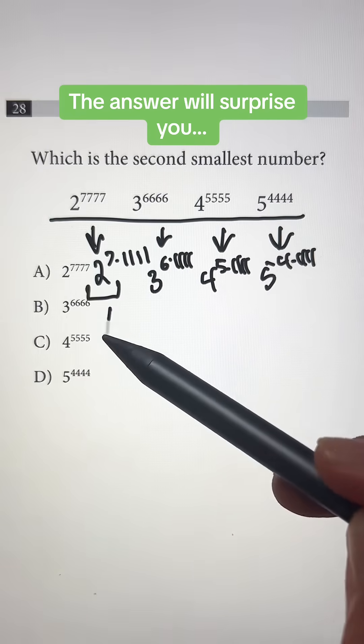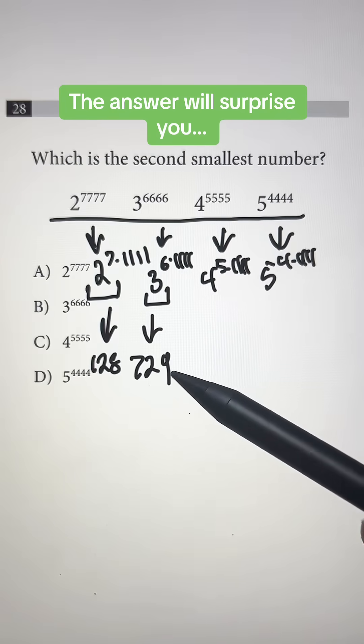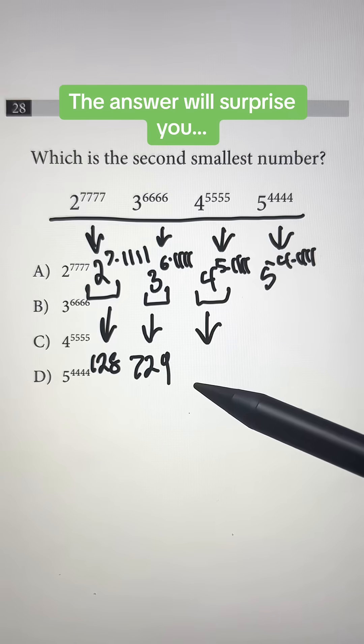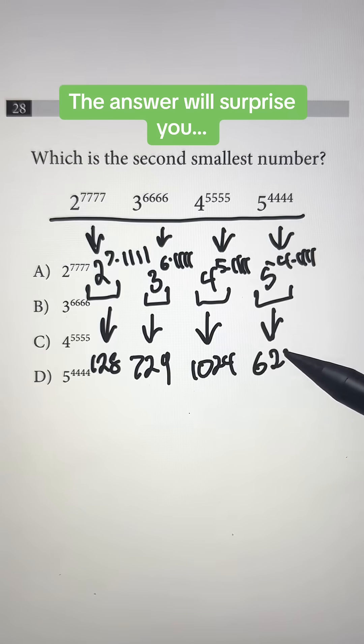So 2 to the 7th power we can rewrite that as 128. 3 to the 6th power that's the same thing as 729. 4 to the 5th power that's going to be the same thing as 1024. 5 to the 4th power is going to be the same thing as 625.